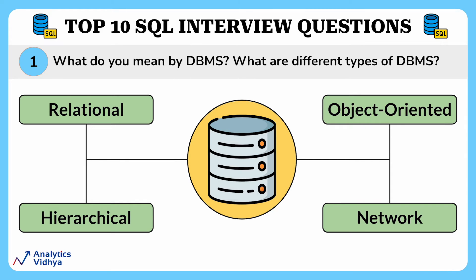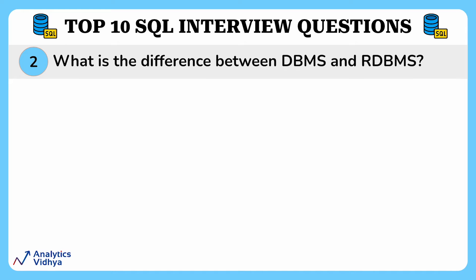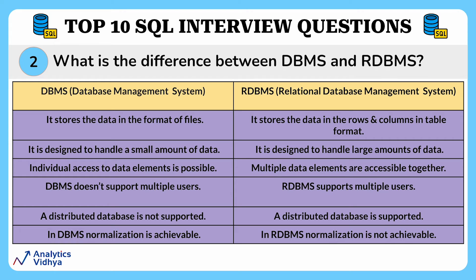That's the basic idea about DBMS. Our second question is: what is the difference between DBMS and RDBMS? The first key difference is that DBMS stores data in the format of files, whereas RDBMS stores data in the format of rows and columns like a table. Secondly, DBMS is designed to handle a small amount of data, whereas RDBMS is designed to handle large amounts of data. Thirdly, within DBMS individual access to data elements is possible, whereas in RDBMS multiple data elements are accessible together.